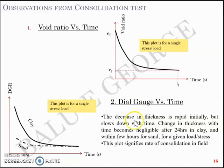This plot signifies the rate of consolidation in the field — in other words, it signals the rate at which the soil settles under field conditions.